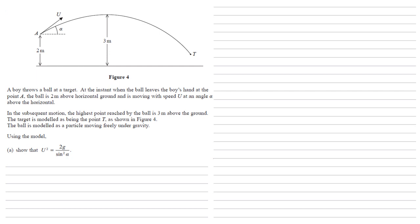A boy throws a ball at a target. At the instant when the ball leaves the boy's hand at the point A, the ball is 2 metres above horizontal ground and is moving with speed U at an angle alpha above the horizontal.